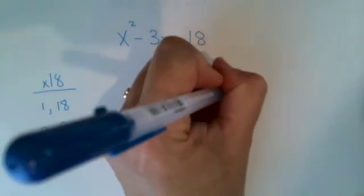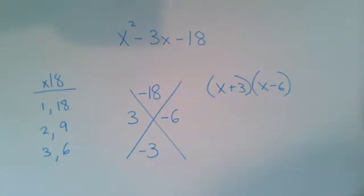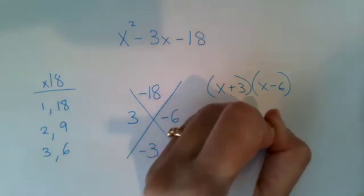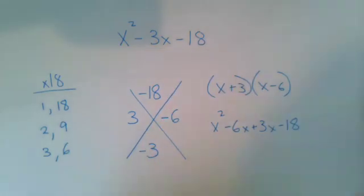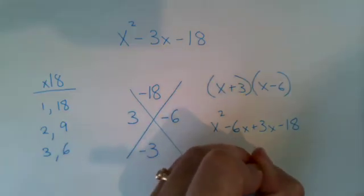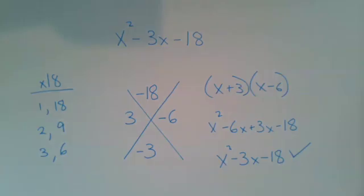So there we go. That means our factors are x plus three, x minus six. And let's do a quick foil to make sure we were right. X squared minus six x plus three x minus 18. Combine like terms, x squared minus three x minus 18. Yup.